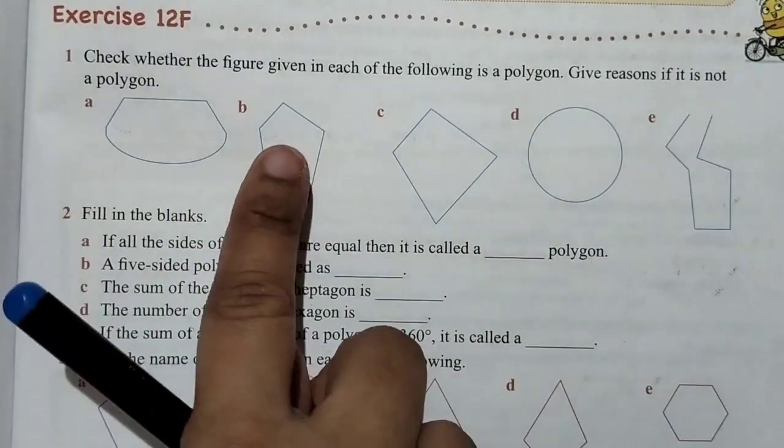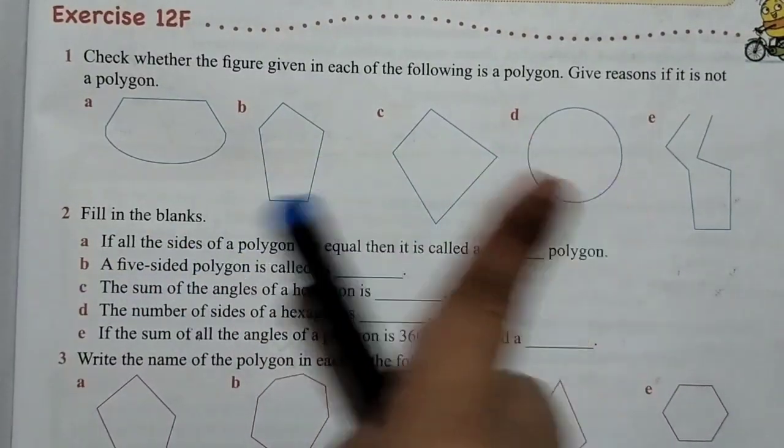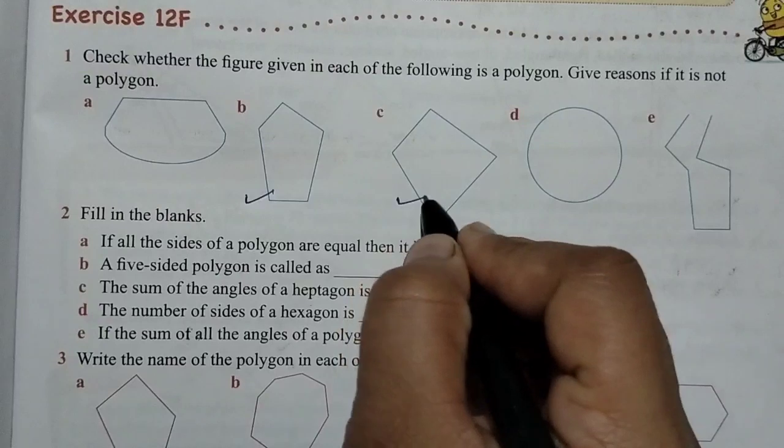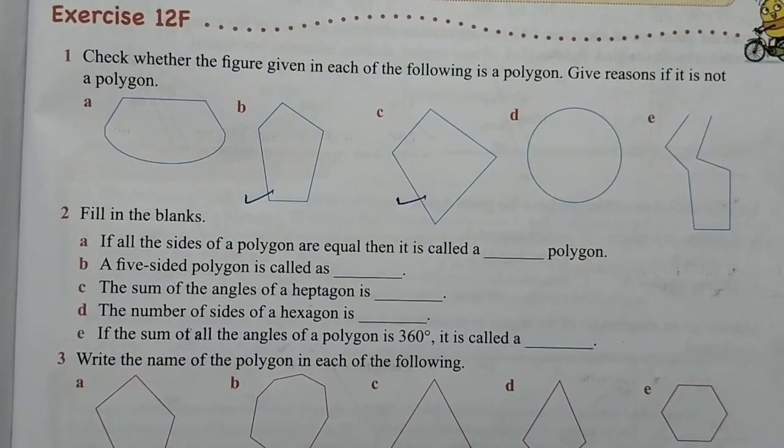Now this is the straight line. So here, B and C are polygons because they are made with straight lines and are closed figures.